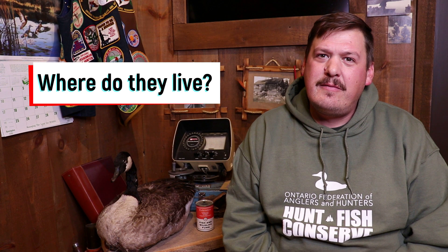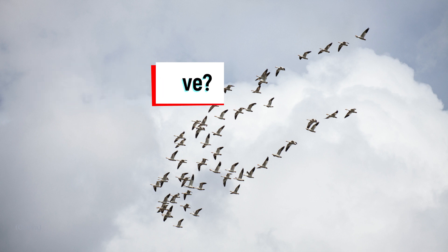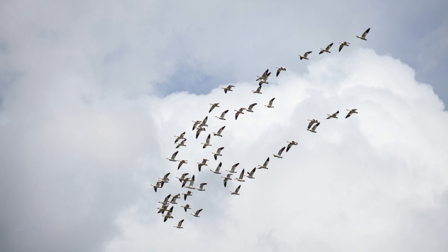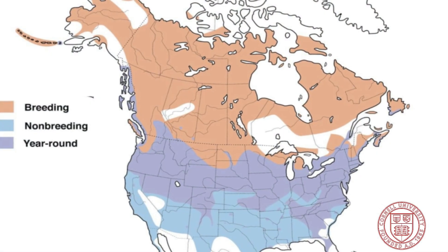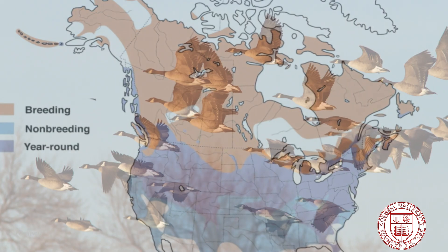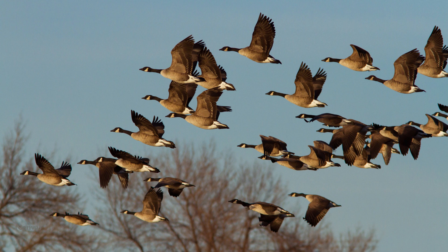Where do they live? Geese are often migratory, which means they travel long distances depending upon the time of year. They usually move north during the summers to breed, and they head south for the winter. Many species of geese head north in the summer and breed in the high arctic, including areas of Nunavut, Labrador, and other similar areas very far north. They migrate south into Ontario and some even further south into the United States for the cold weather.